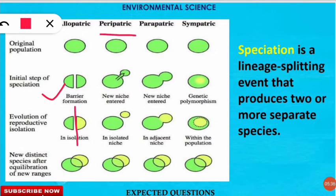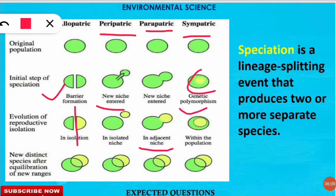In peripatric speciation, a new isolated niche is entered and a new species is produced. In parapatric speciation, speciation occurs due to an adjacent niche, when the adjacent niche is entered and new species are produced. In sympatric speciation, genetic polymorphism is seen within the species, which results in the formation of different species within the same population.